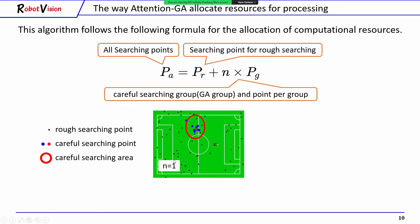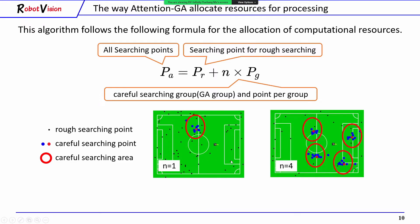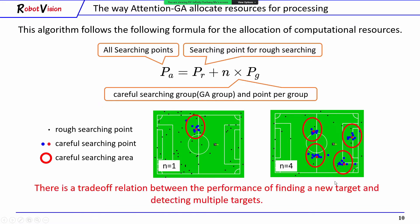On the other hand, when there are many groups of GA, the searching system has high performance for detecting multiple targets. We can see that this is a trade-off relation between the performance for finding a new target and detecting multiple targets.